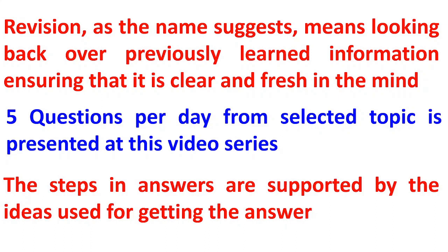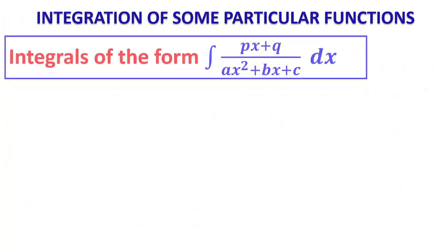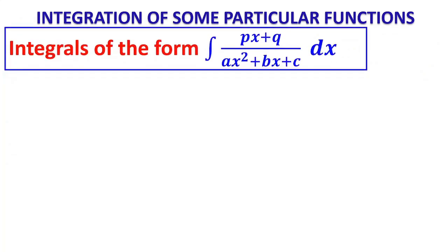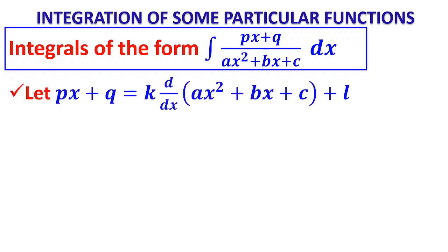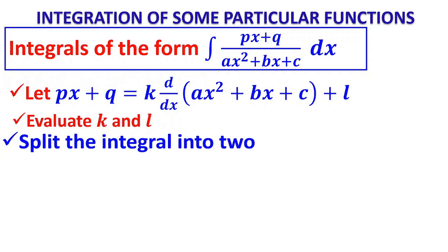In Day 7, we will see integrals of the form ∫(px+q)/(ax²+bx+c)dx. To remember it: numerator is a linear factor, denominator is a quadratic factor. We write the numerator equal to k times d/dx of the quadratic factor plus l, so px+q = k·d/dx(ax²+bx+c) + l. Here we introduce two constants k and l which we will evaluate.